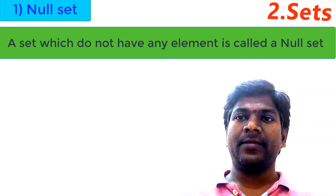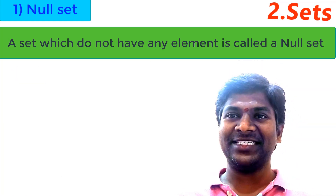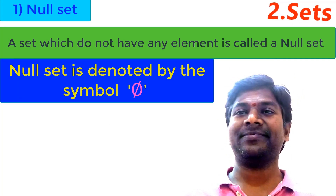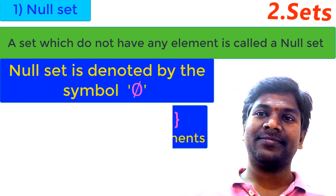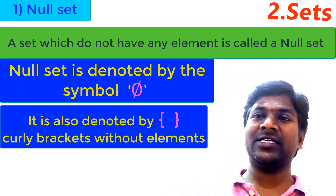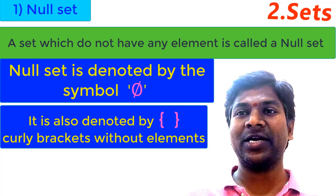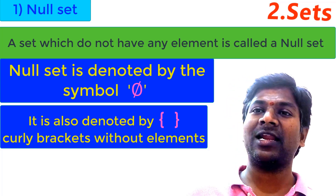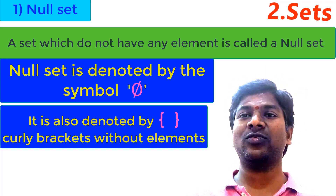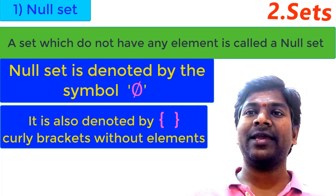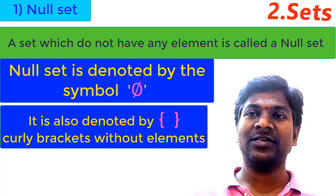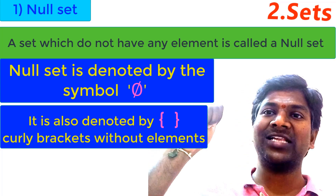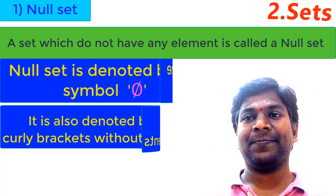Null set is denoted by phi (φ), or null set may be denoted by just curly brackets without writing any elements — { }. You can see the symbol of null set on the screen.